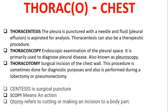'Thoraco' refers to the thoracic area or chest. Here are three examples: 'Thoracentesis' — 'centesis' means surgical puncture — the pleura is punctured with a needle and fluid is aspirated for analysis of pleural effusion. 'Thoracoscopy' — 'scopy' means endoscopic examination — is an endoscopic examination of the pleural space, primarily used to diagnose pleural diseases, also known as pleuroscopy. 'Thoracotomy' is a surgical incision into the chest wall.